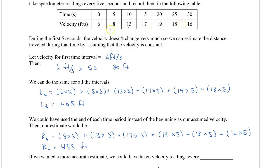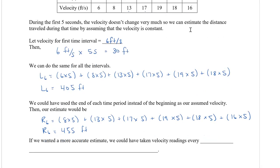If we wanted a more accurate estimate, we could take velocity readings every two seconds or even every second — more readings give more accuracy. That's how we can use approximation to solve a distance problem given velocities.